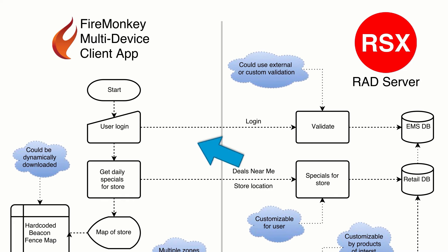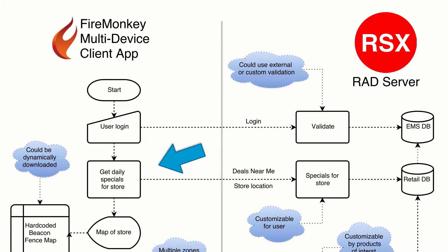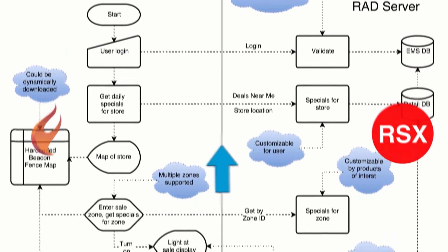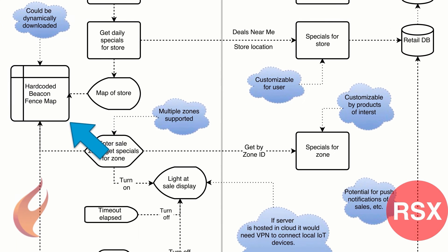Once the customer is validated, the application will request specials for the store that they're at from the RAD server. The RAD server will pull these details from a separate database that contains information about the retail store.